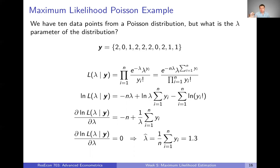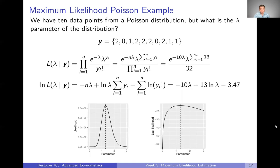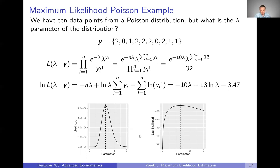That might have seemed fast; it might be worth pausing and working through the math yourself. Maybe it also helps to see things graphically. Here I have the same problem and same data, with the likelihood function written down again. Instead of jumping straight to the log likelihood function, let's plug in our numbers — our Y values in these two spots — and we get this expression on the right. What this really reinforces is that once we know our data, the likelihood function is just a function of lambda. We could plot it: lambda across the X axis, likelihood across the Y axis.